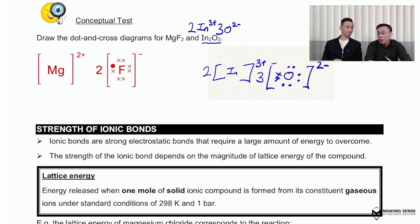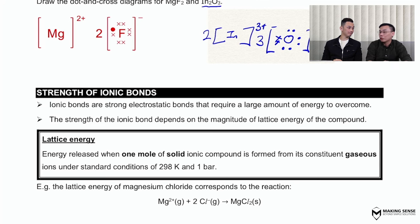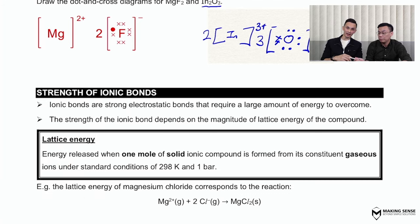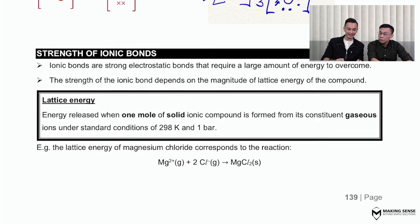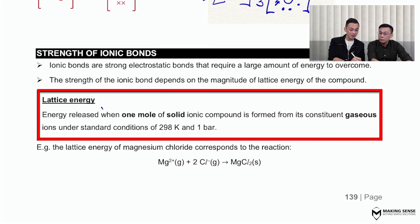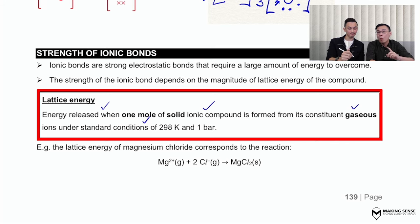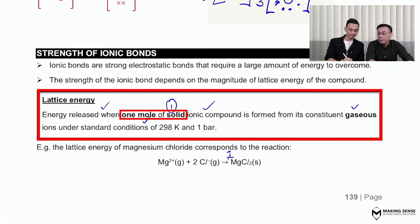Ionic bonds are described as a strong electrostatic force of attraction, but how strong is strong? We can actually measure the strength of an ionic bond using lattice energy. Lattice energy is the energy released when one mole of ionic compound is formed from its constituent gaseous ions under standard conditions. Two key points to focus on: first, the stoichiometric coefficient in front of the compound in the balanced equation must be one; second, the compound is formed from ions that must be in the gaseous state.